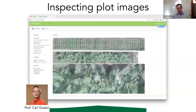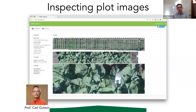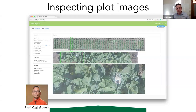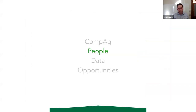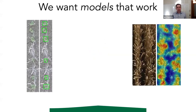This is also showing the progression of data over the growing season — you can see plants maturing and flowering. That's the people side of things; data is also really critical.